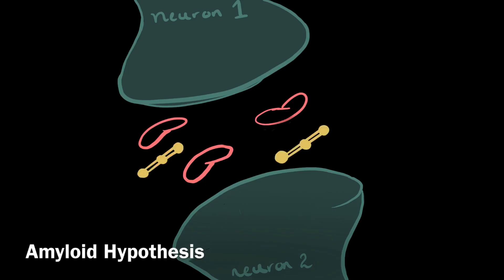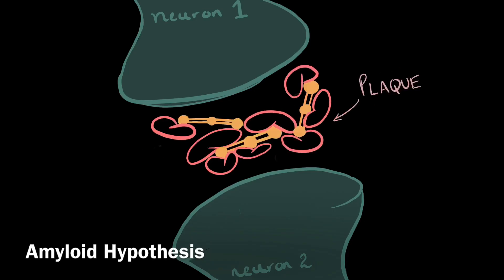Fibrin changes all that. It binds to all the amyloid beta proteins and forms the infamous plaques, which clog up the synapses, preventing information from going from one brain cell to the next.